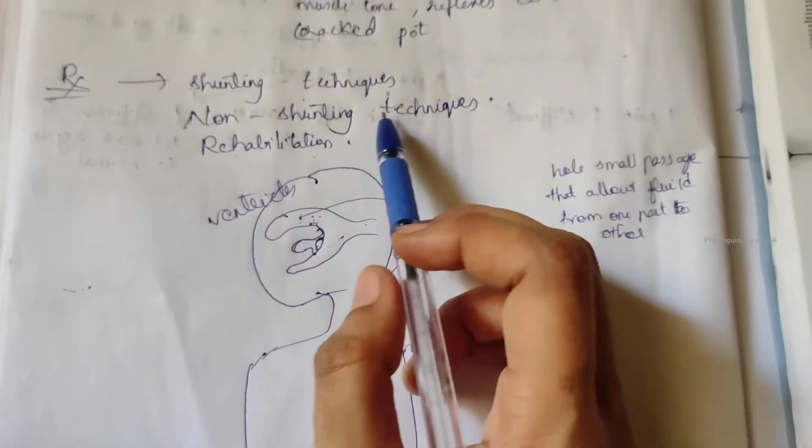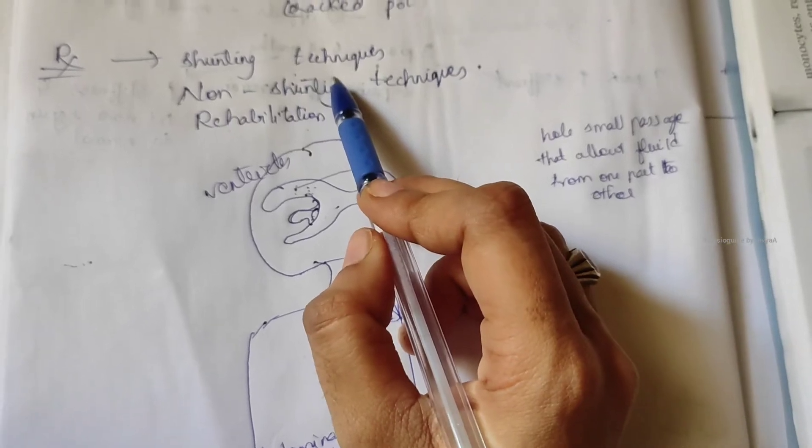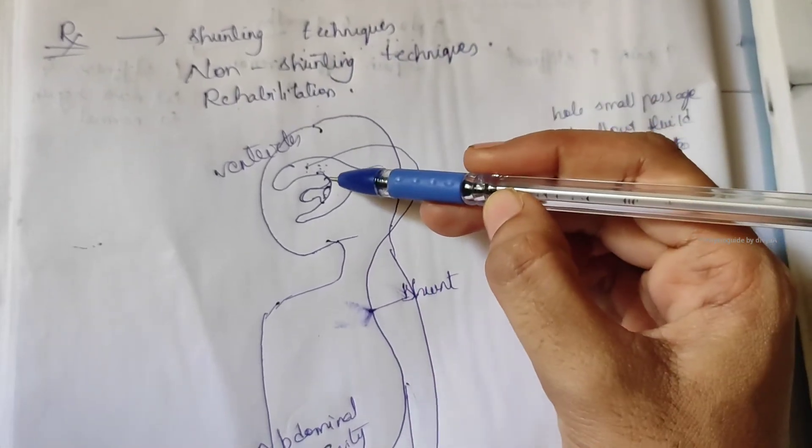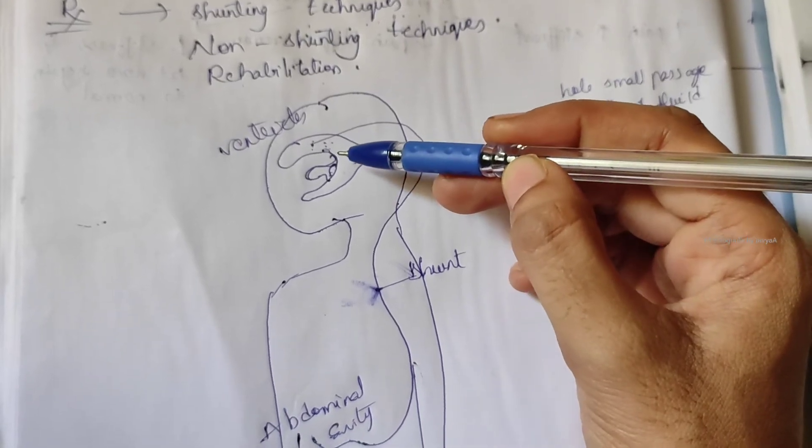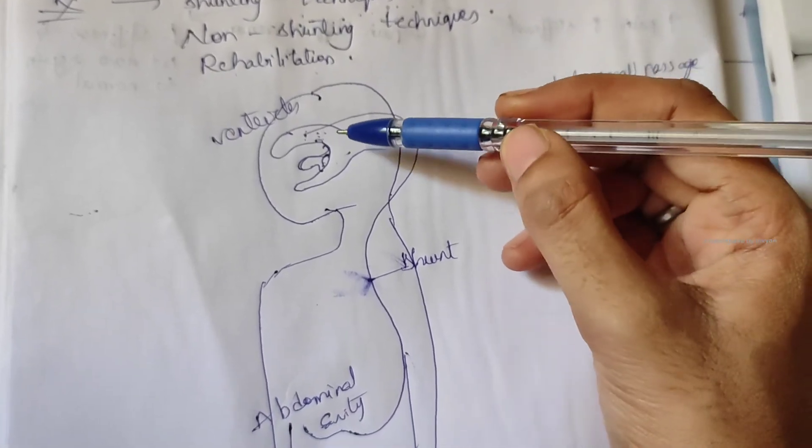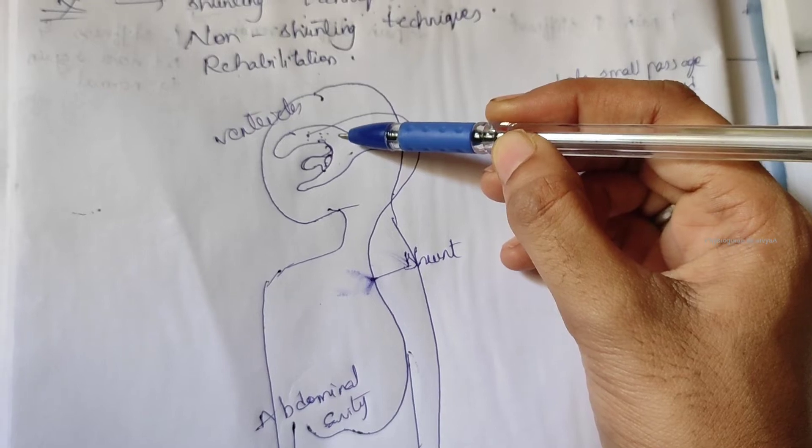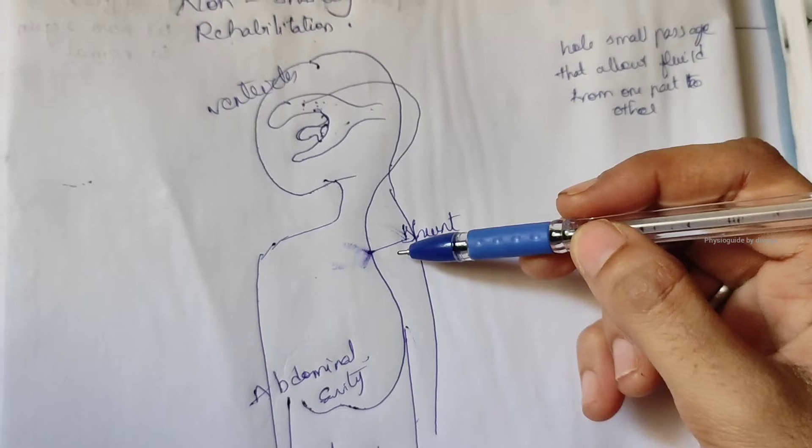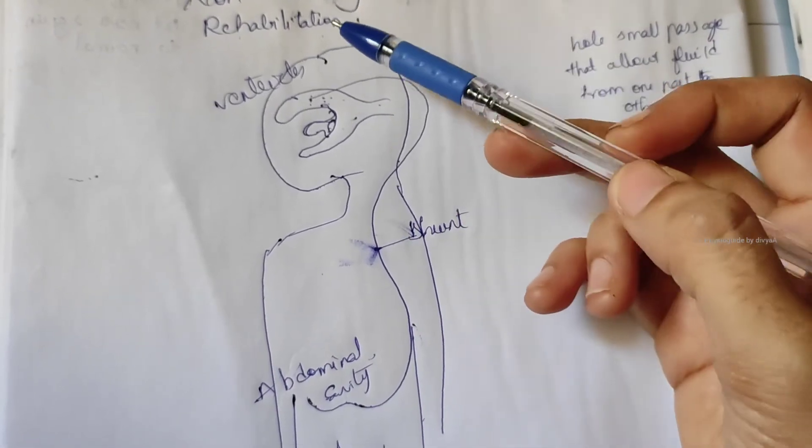Shunting technique: the ventriculoperitoneal shunt. This surgery relieves intracranial pressure in hydrocephalus by shunting fluid from the ventricles of the brain into the abdominal cavity through a catheter valve system. The pressure effects on the brain are thus relieved by this method.